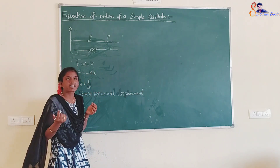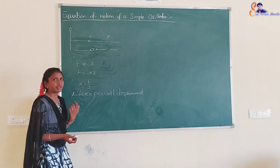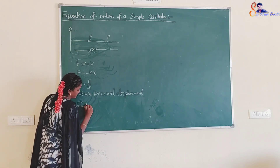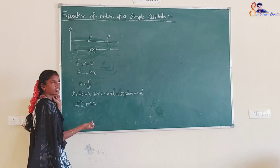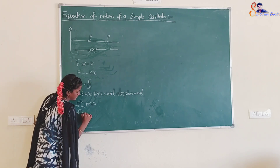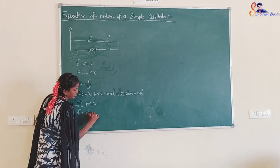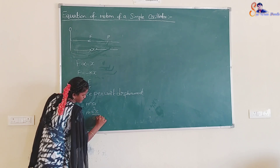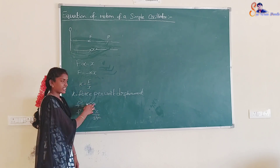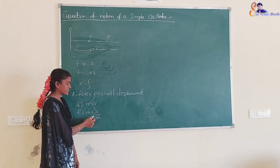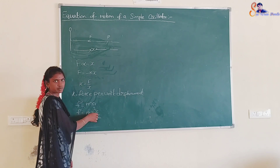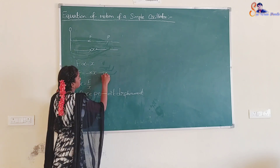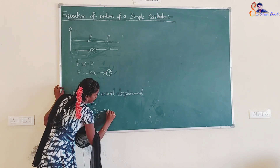According to Newton's second law, F is equal to m times a. So F is equal to m into d²x/dt², which we write as equation 1. And the acceleration a equals d²x/dt². This gives us equation 2.